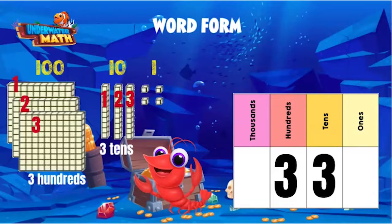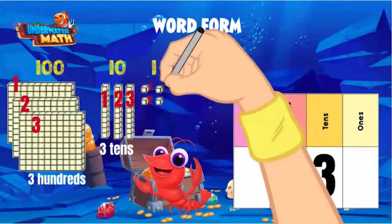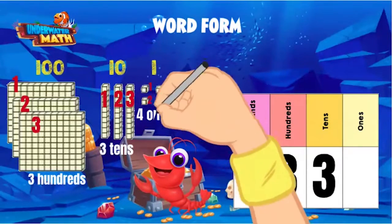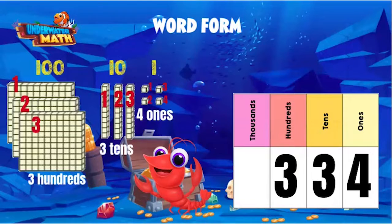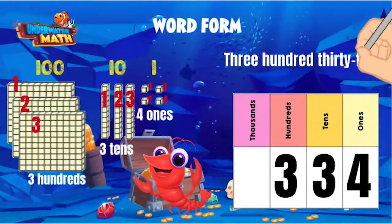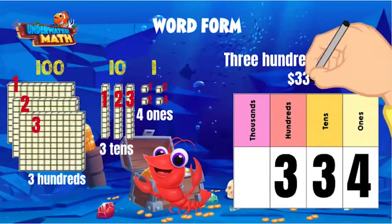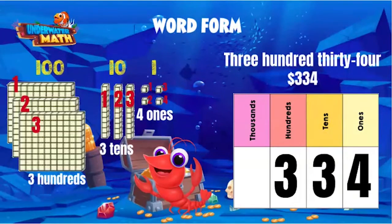Let's count the ones: one, two, three, four — four ones. To write this number in word form, we write the words as we say them. Say the number out loud as I write: 334. So the gold's value is three hundred thirty-four dollars.